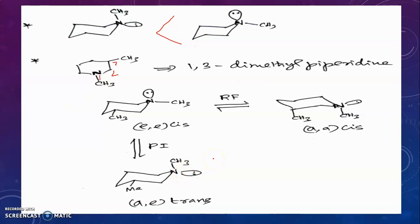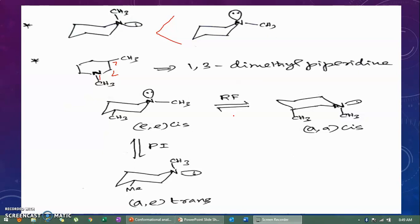Cis and trans isomers are configurational isomers. Pyramidal inversion leads to configurational isomerism, whereas ring flipping leads to conformational isomerism. In ring flipping, cis remains cis; whereas in pyramidal inversion, cis becomes trans. This is the information for this lecture. Thank you.